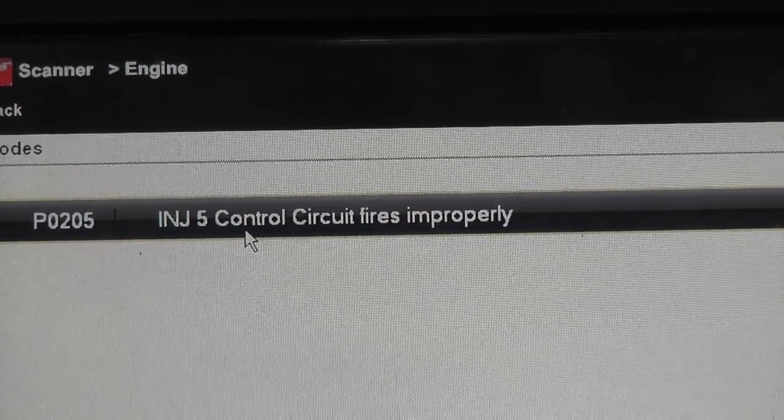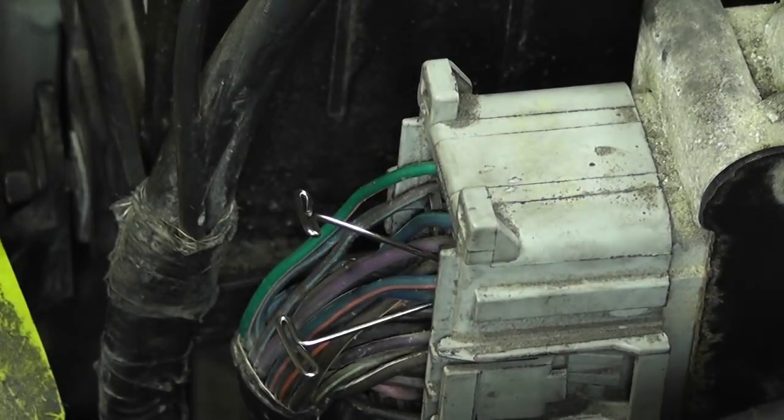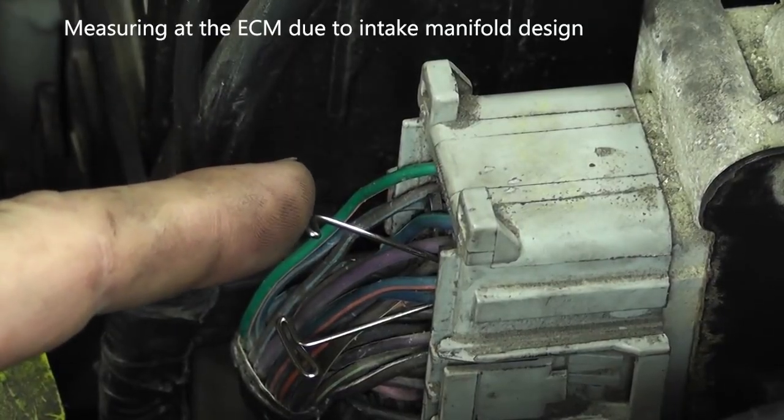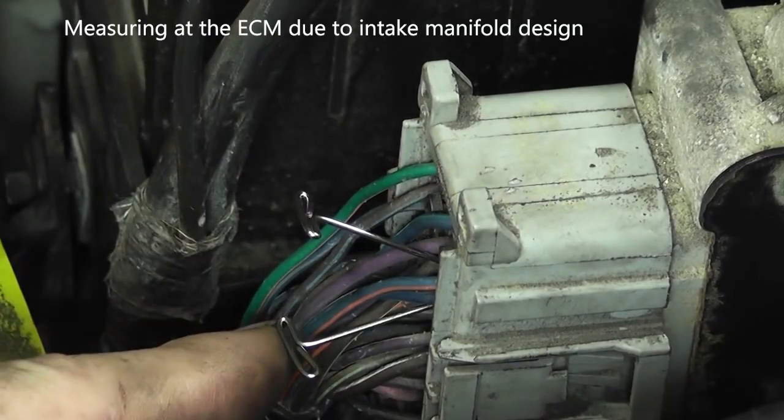2001 Dodge Grand Caravan with a 3.3 liter engine, setting a number five injector control circuit trouble code. I have two injector control wires identified. Right now I'm going to use the number one up top right here as a known good to show you what a known good one should look like. And then this is my number five.